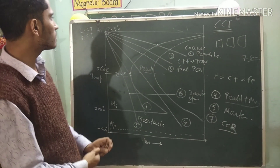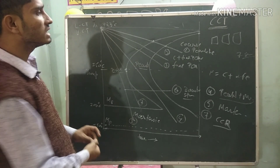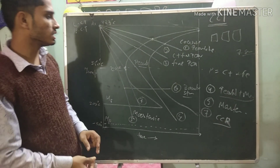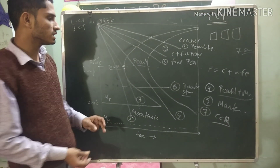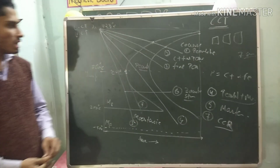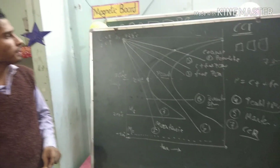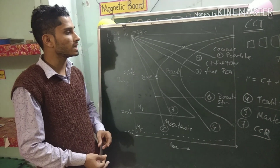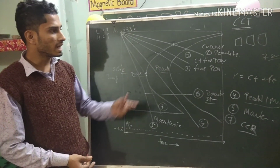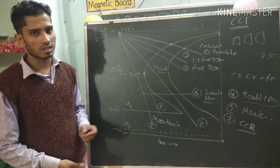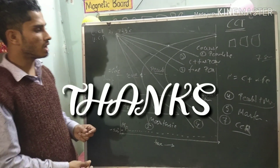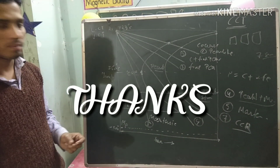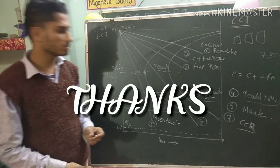So this is all about the CCT curve. In the next lecture we will see about pearlitic transformation, bainitic transformation, and martensitic transformation — how they move. Thank you.